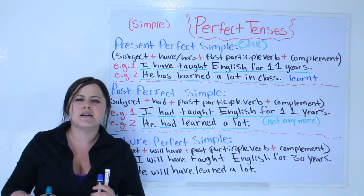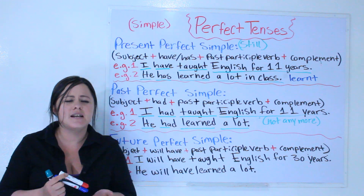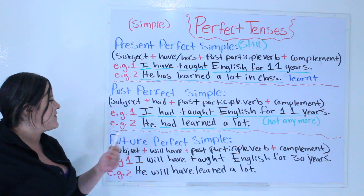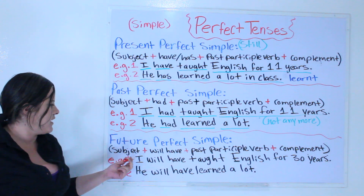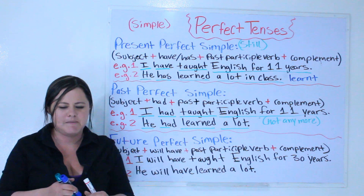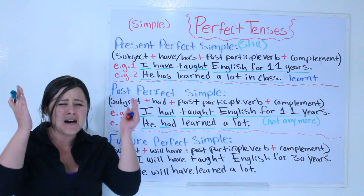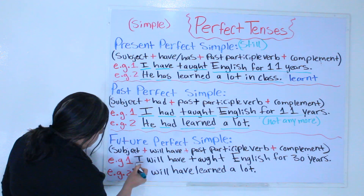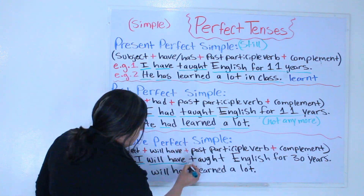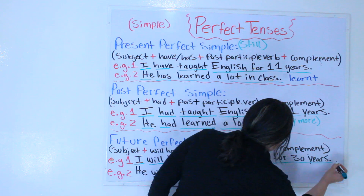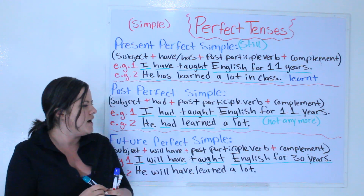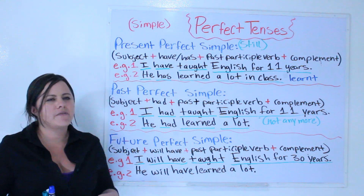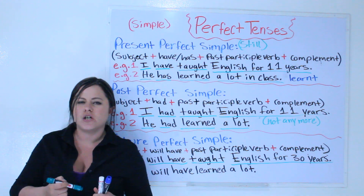The next one is a little bit more complex to understand for non-native speakers, but that's what I'm here for. Future perfect simple: subject, will have, past participle verb, complement. For example: I will have taught English for 11 years. Usually when we use the future perfect simple, we use conjunctions such as 'by the time' or 'when.'